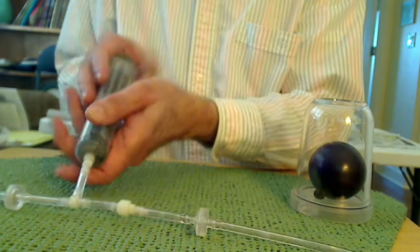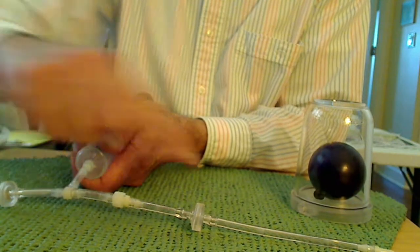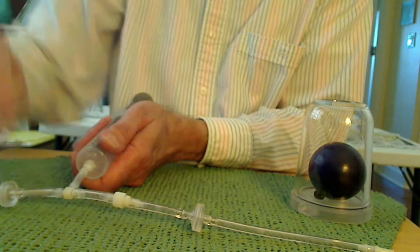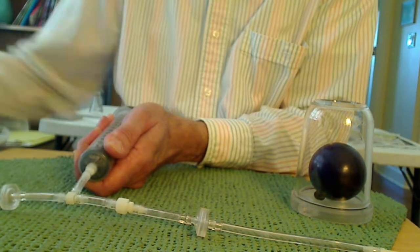Now remember I use the syringe and when I pull on the syringe air comes this way. This is a one-way valve going this way and when I push on the syringe the air goes out this way. This is a one-way valve going that way.